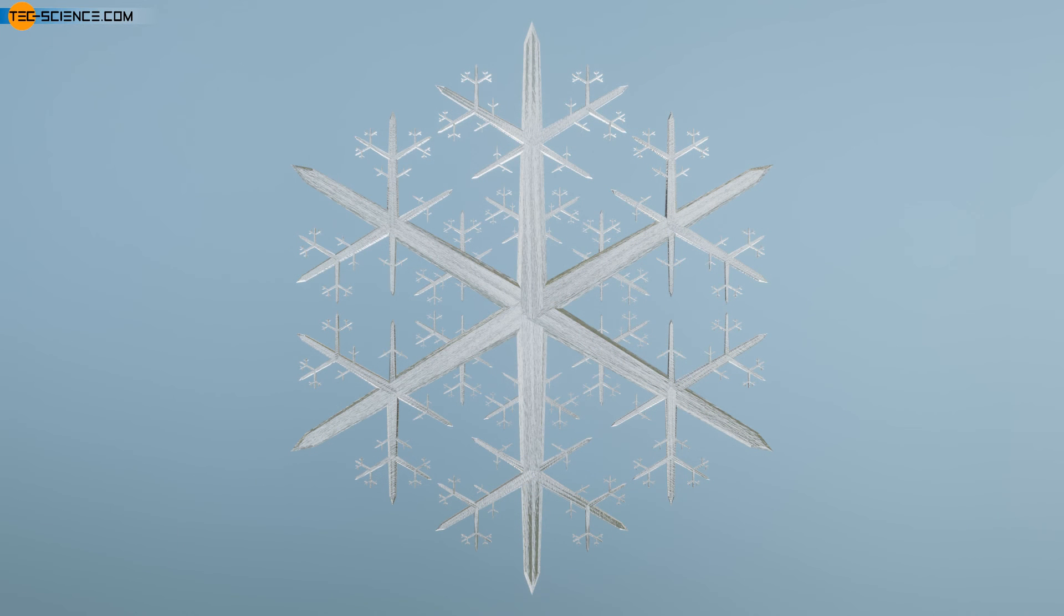Dendritic crystal growth is also seen in water, for example when raindrops crystallize into snowflakes on cold winter days. The hexagonal lattice structure of the ice leads to the typical six main branches of the snowflake, from which several smaller branches diverge.